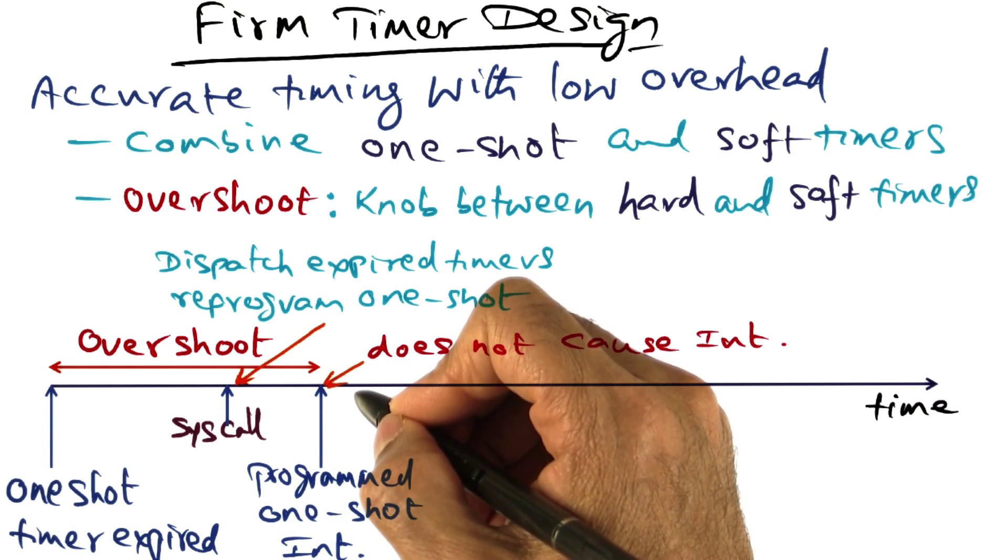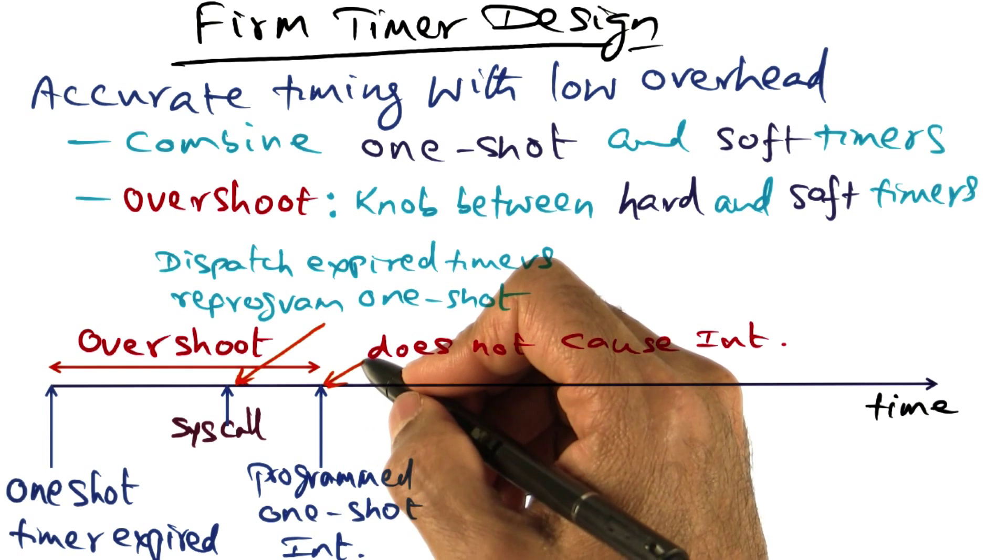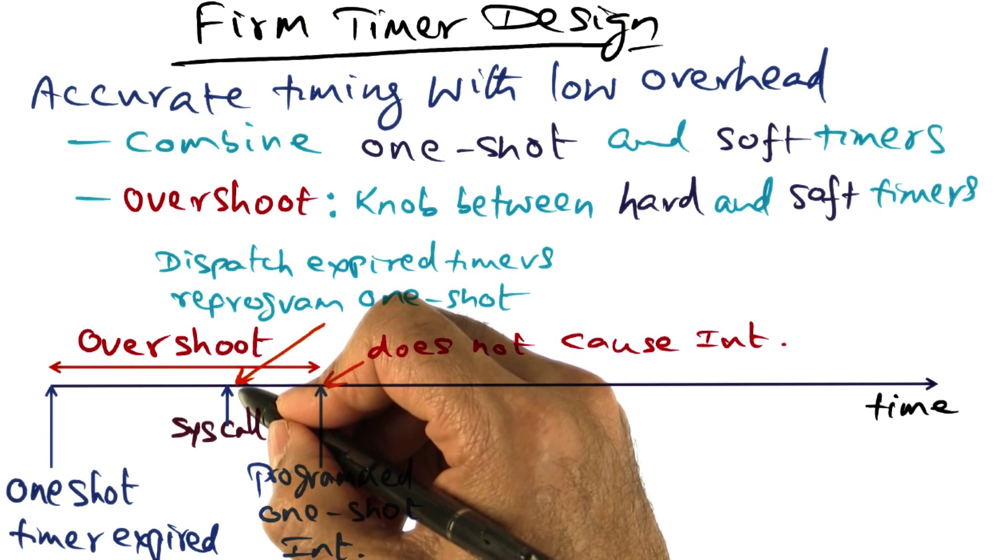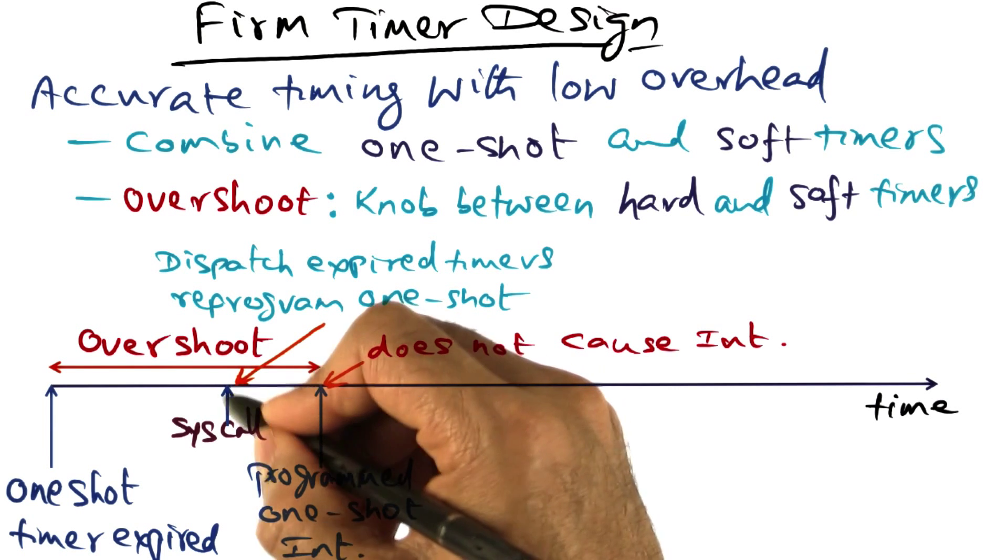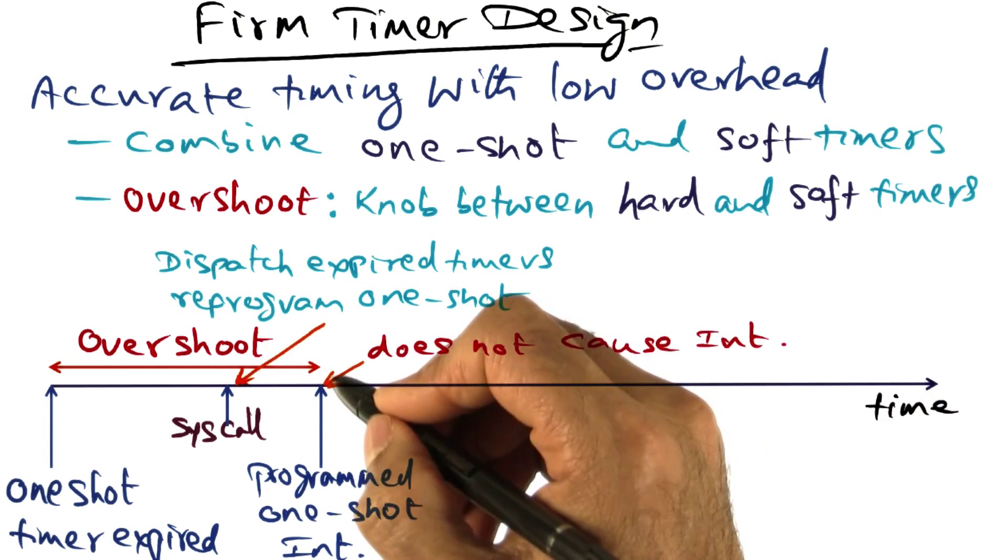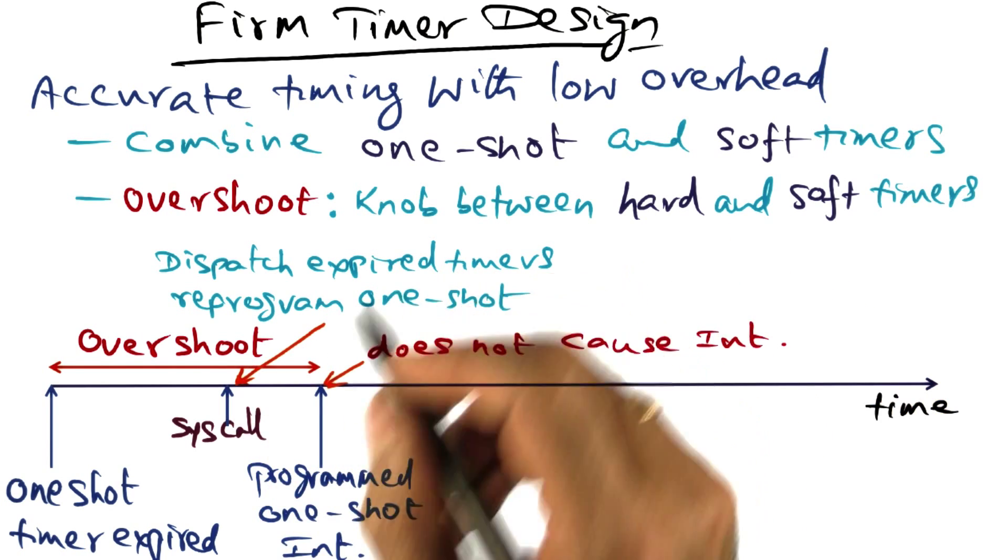I mentioned that fielding a one shot timer interrupt is expensive. We avoided that because fielding that interrupt happened as part of handling the system call. And at this point itself, we've reprogrammed the one shot timer for the next event as well.